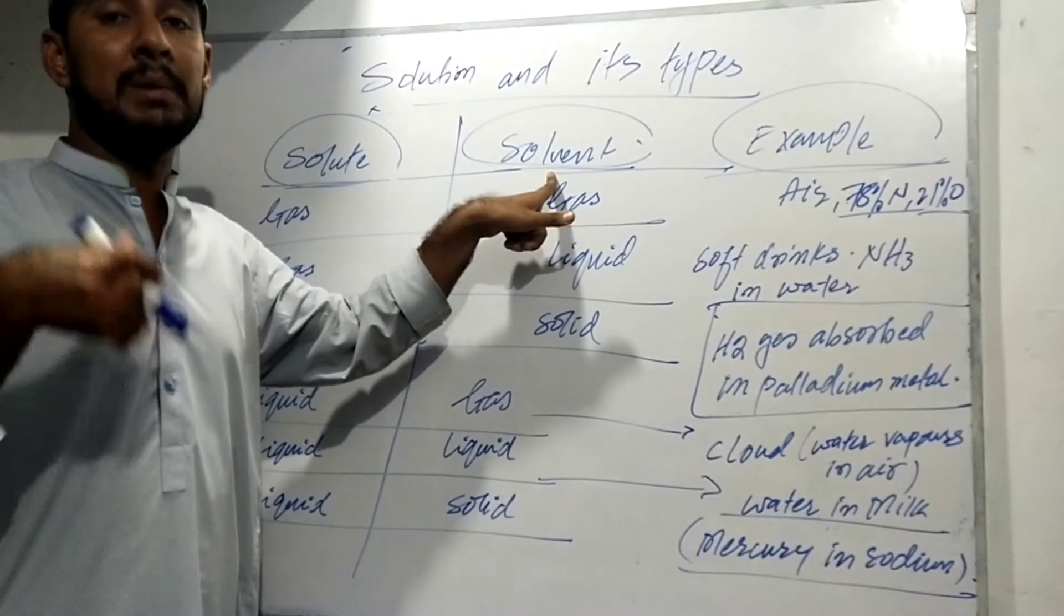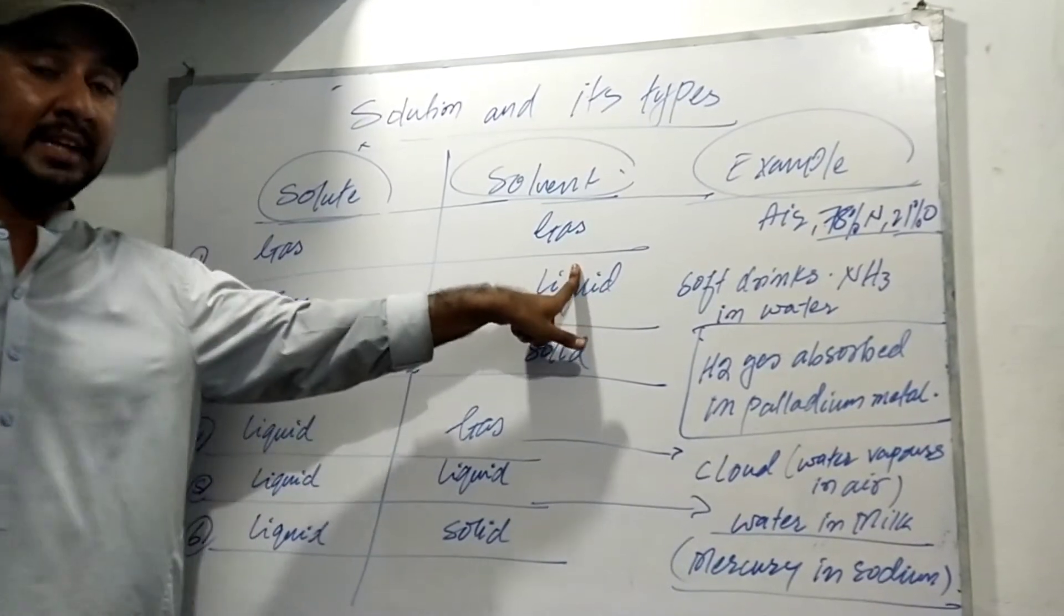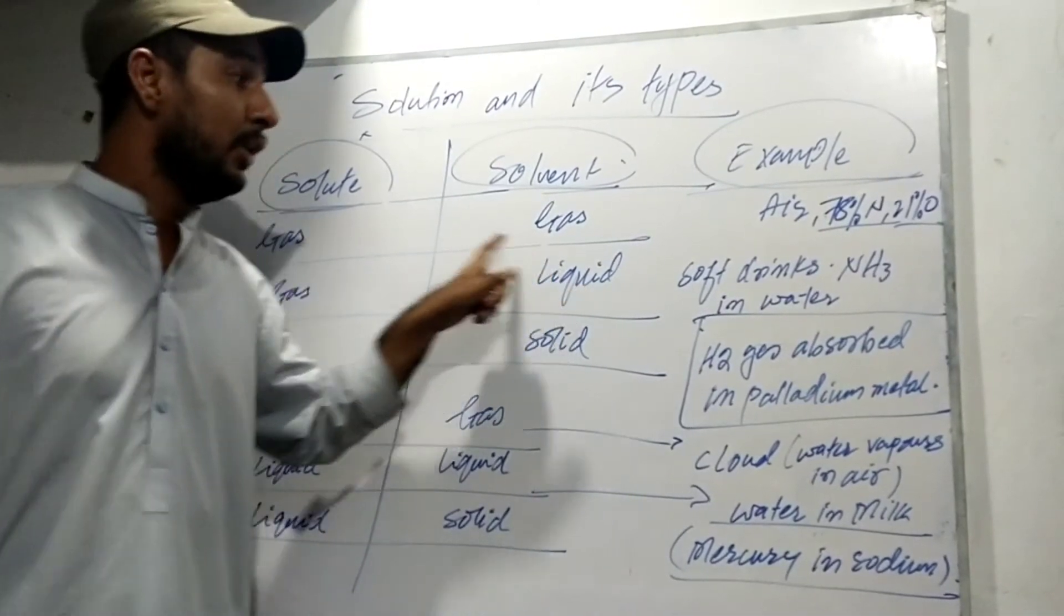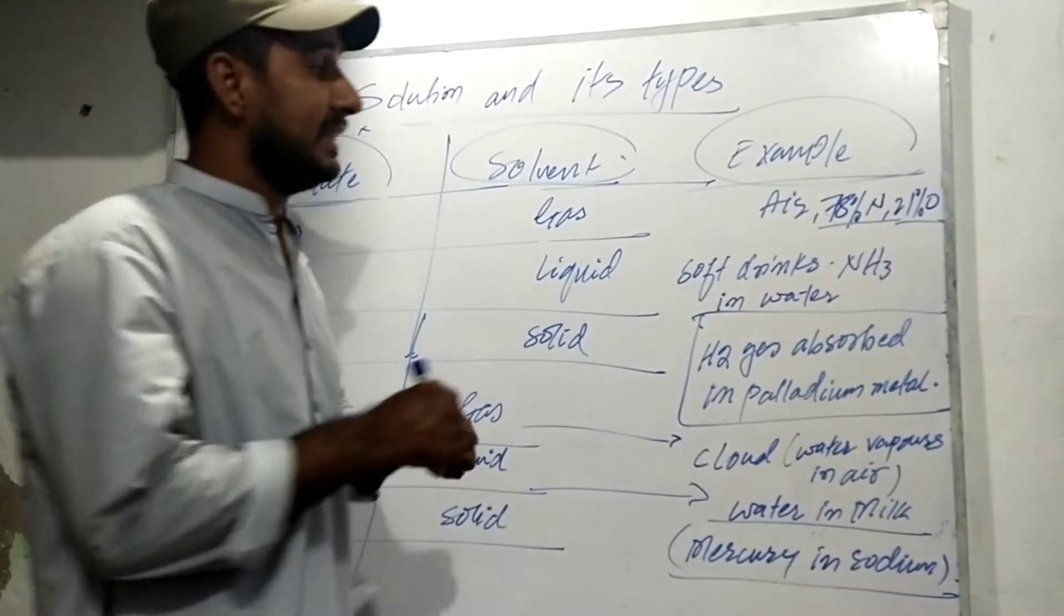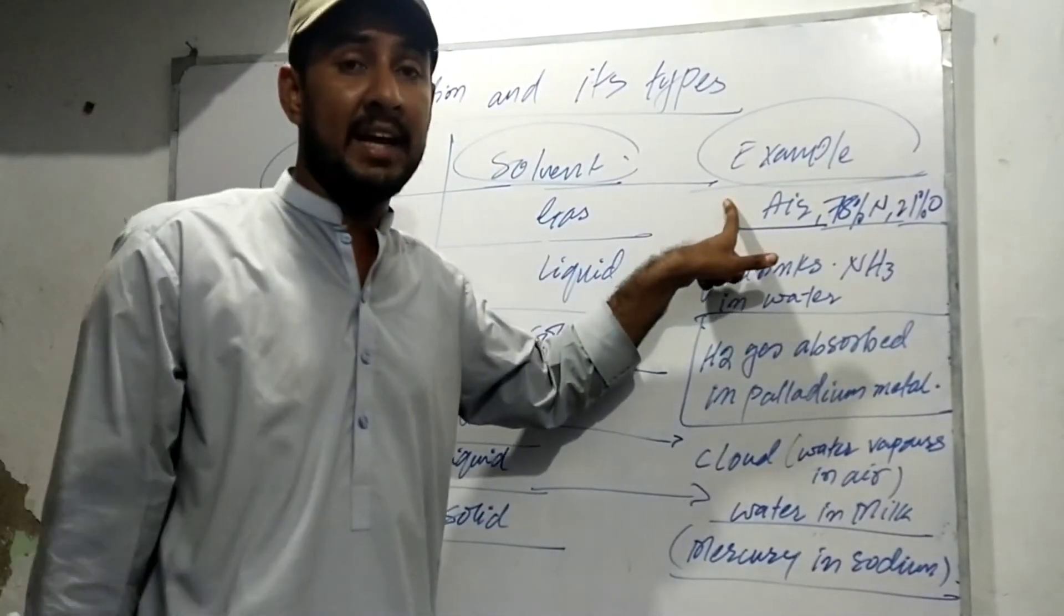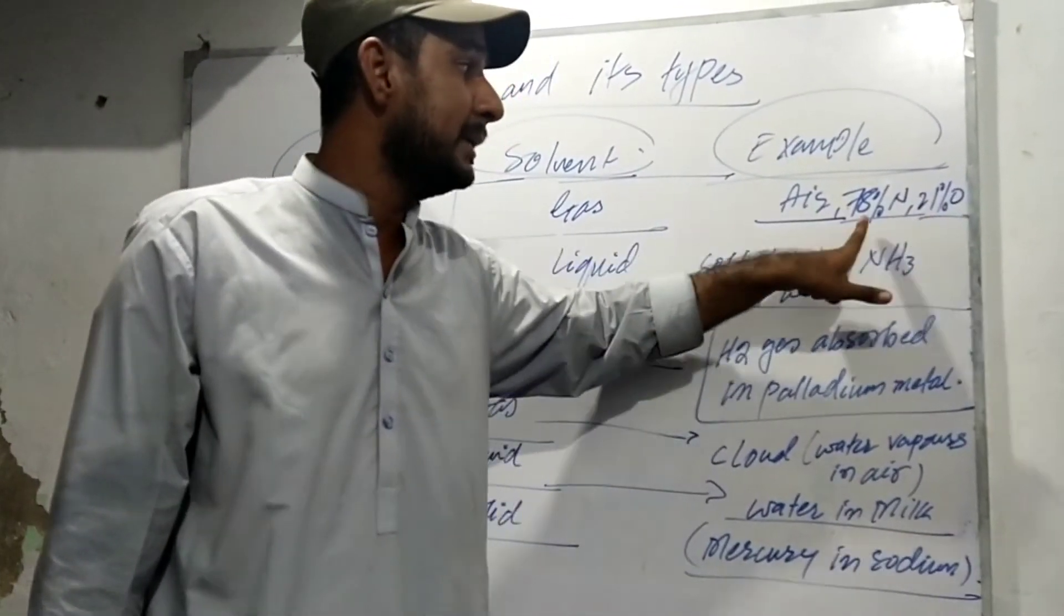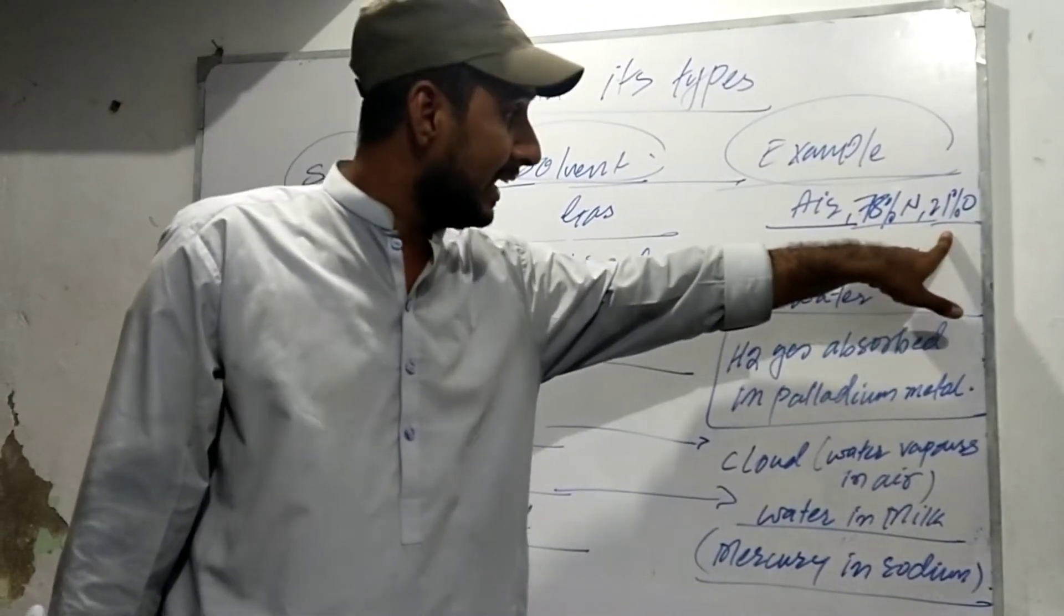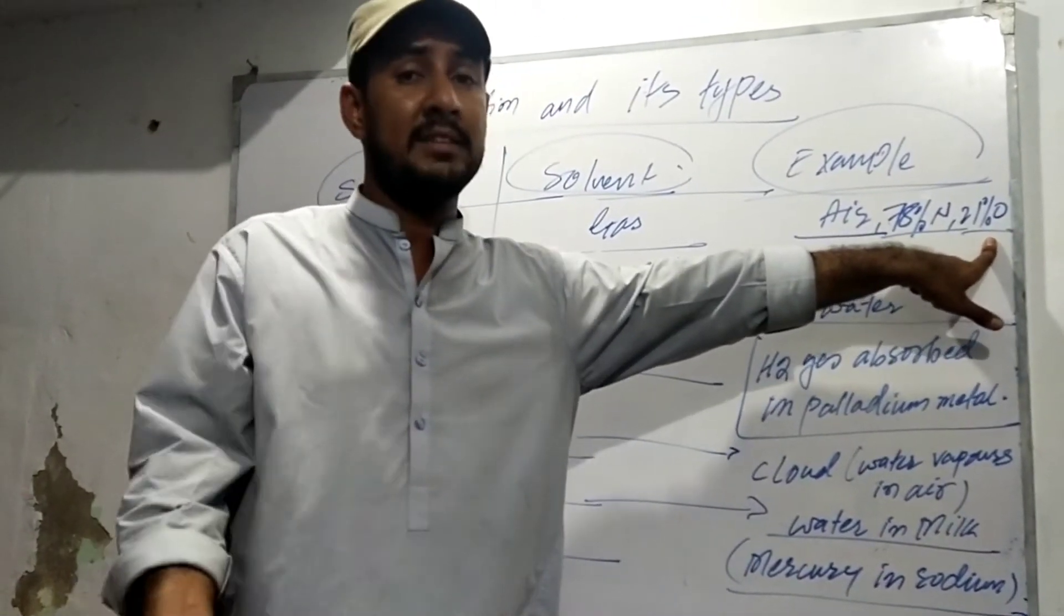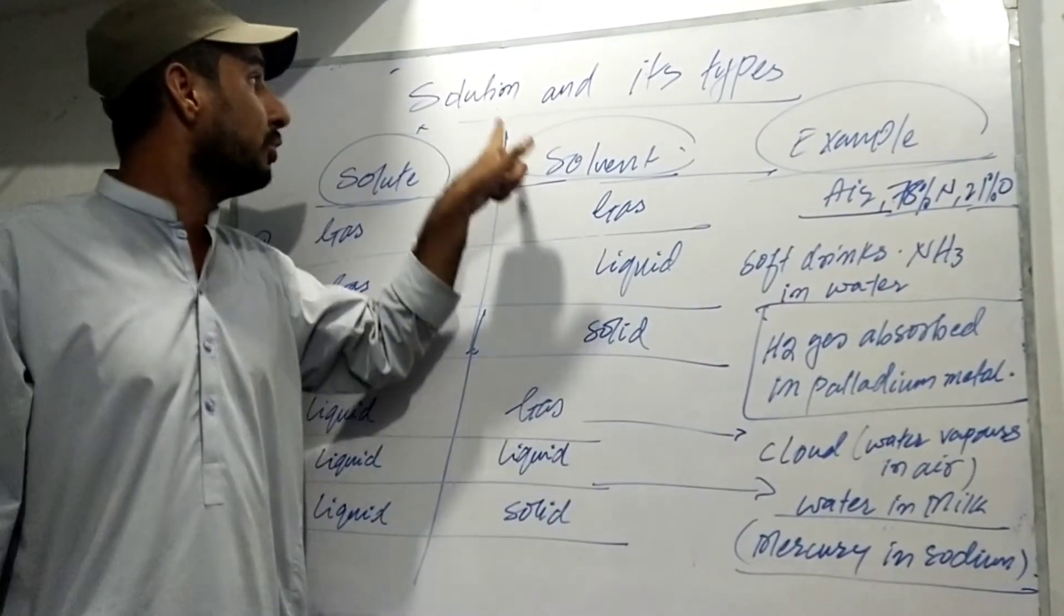Gas in gas solutions - for example, air. Air is a gaseous mixture solution. There are 78% nitrogen, then oxygen in maximum quantity, then carbon dioxide at 0.03%. So gas to gas mixture is a solution.